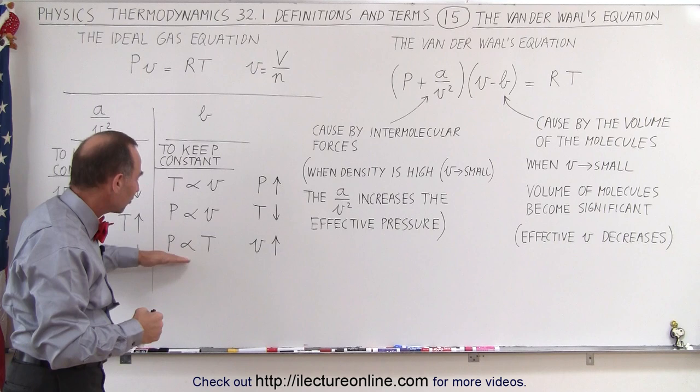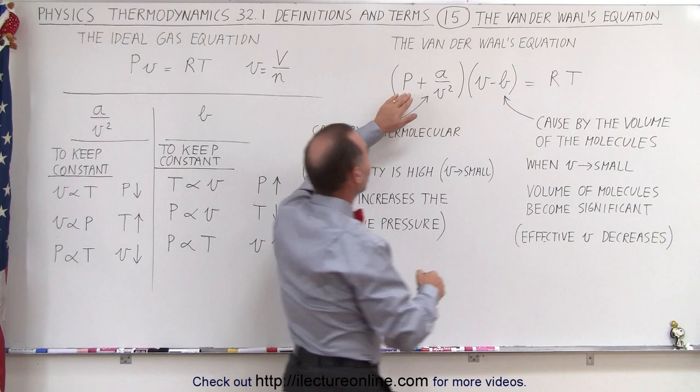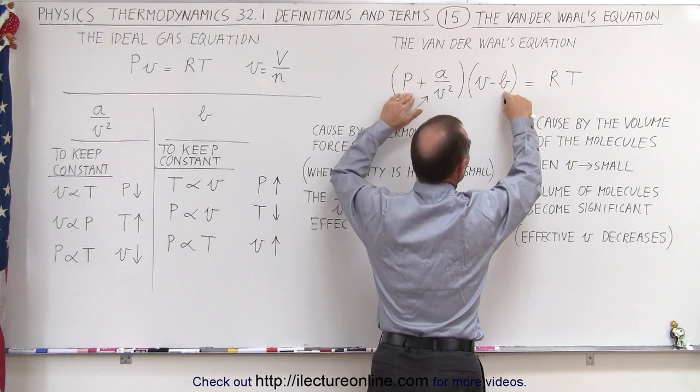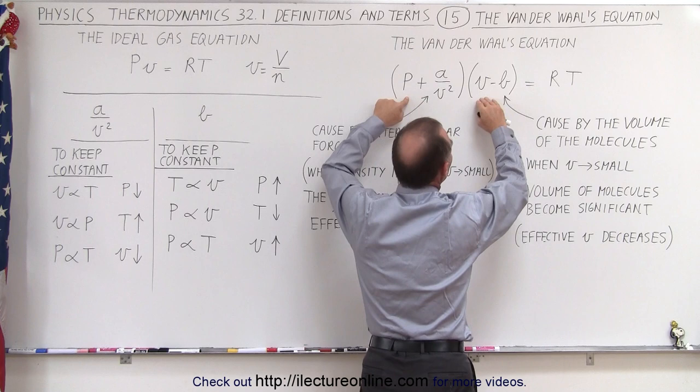And finally, what if we want to keep the pressure and the temperature constant and have to account for the volume of the molecules? So we keep the pressure the same, we keep the temperature the same. What has to happen to the volume of the container, because we subtract that term?